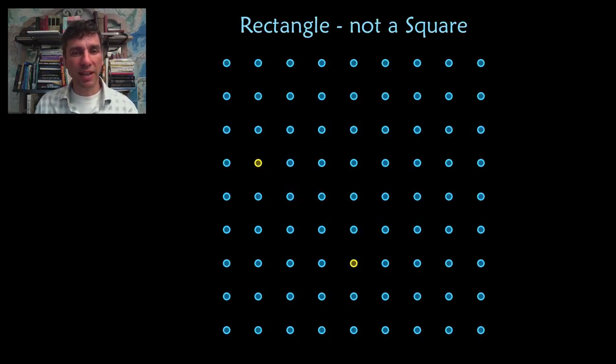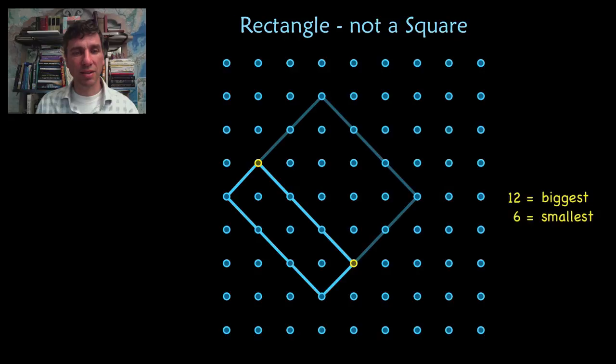A rectangle that is not a square. Try to find that yourself. Turn off the video. You want to find the largest rectangle that is not a square, and then the smallest rectangle that is not a square. There's the biggest and there's the smallest.